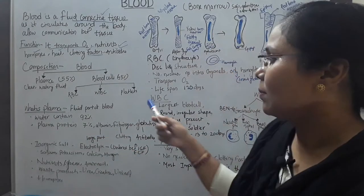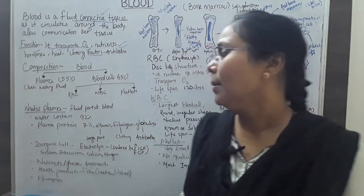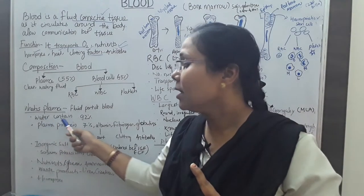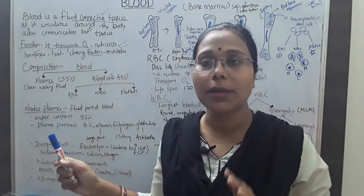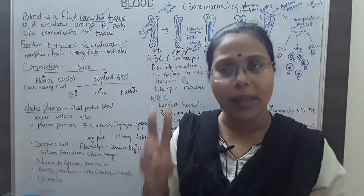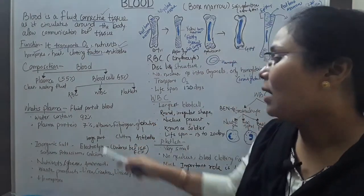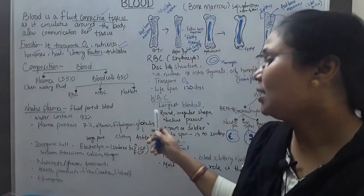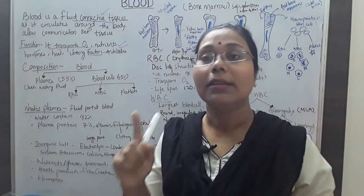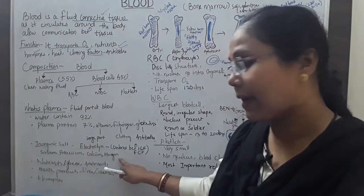Plasma is the fluid part of the blood. It contains 92% water. Then, 7% of plasma is plasma proteins — these are named albumin, fibrinogen, and globulin. The remaining 1% consists of inorganic salts such as sodium, potassium, calcium, and manganese.